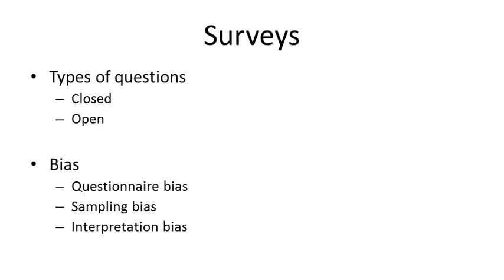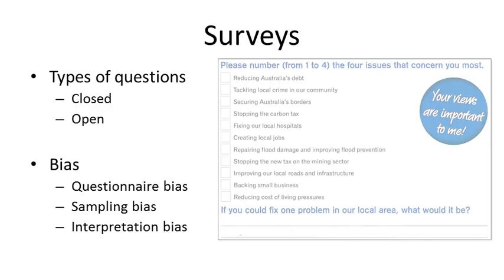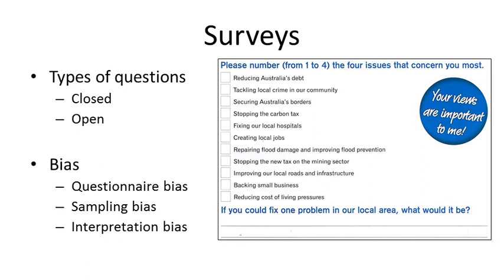So let's suppose you're going to conduct a survey. You need to choose suitable questions to get the kind of data you want, and you need to choose a suitable sample who actually represent the greater population. You can ask basically two kinds of questions. Closed questions are ones where the surveyor decides what answers are allowed. For example, looking at a survey scanned from a political leaflet, the first question there is a closed question – you have to number four boxes from one to four, choosing four issues from that list. This is a closed question.